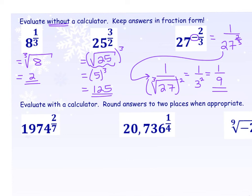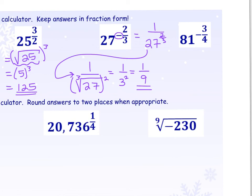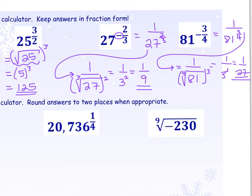Try 81 to the negative 3 fourths — model what we just did. The answer is 1 over 27. For 81 to the negative 3 fourths: take the reciprocal of 81, making the exponent positive. 3 is the power and 4 is the index. The fourth root of 81 using your chart is 3, and 3 cubed is 27. Recognizing it's in fraction form, the answer is 1 over 27, not just 27.